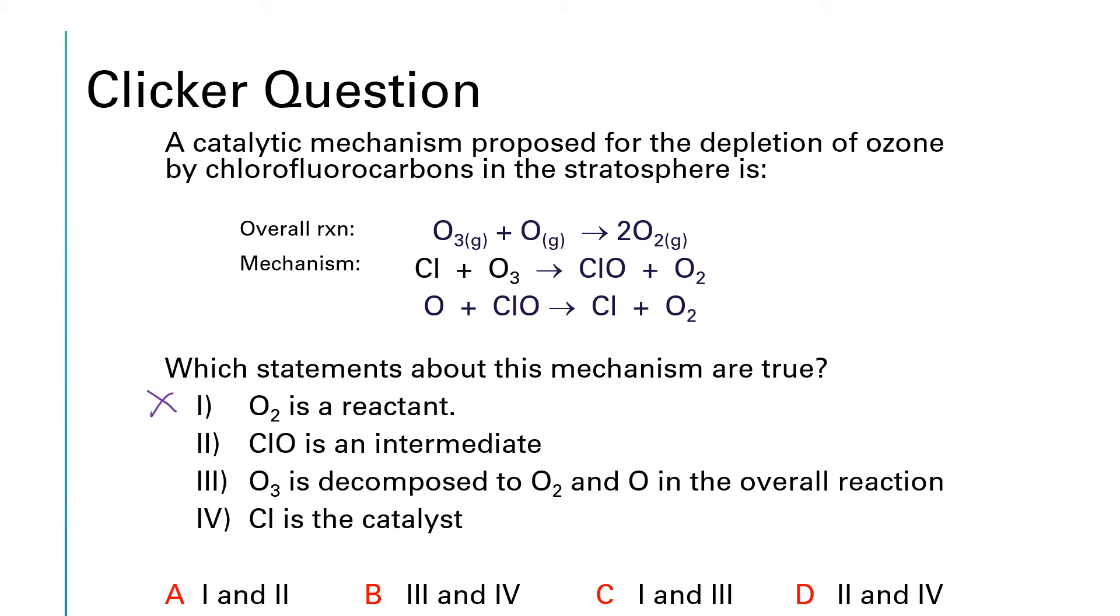The next statement says that ClO is an intermediate. Well, ClO is produced in the first step and it's consumed in the second, so that one is true. ClO is an intermediate. Step or answer choice three says that ozone is decomposed to molecular oxygen and atomic oxygen in the overall reaction. No, that's not true in the overall reaction. Ozone reacts with atomic oxygen to create molecular oxygen, so it has the role of atomic oxygen incorrect in this statement.